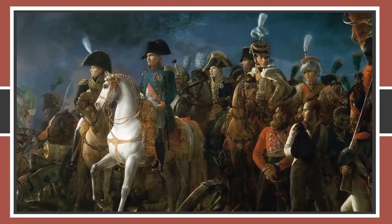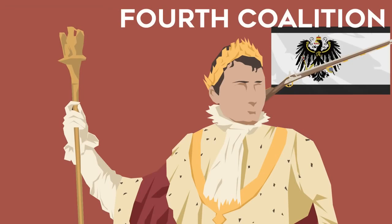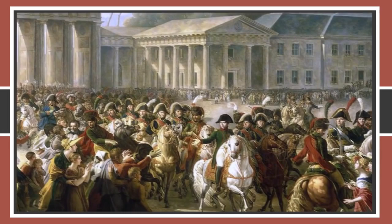Napoleon's conquering of the German states worried Prussia, who formed the Fourth Coalition in 1806. Austria wasn't having it and retired to neutrality, allowing Prussia to be swiftly defeated in a year. In the peace terms, Napoleon expanded his German holdings and formed the Duchy of Warsaw.